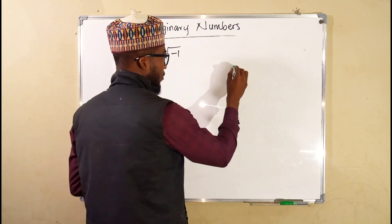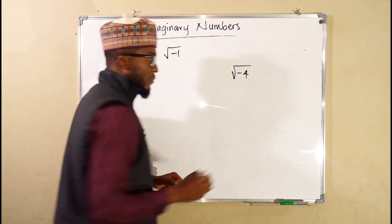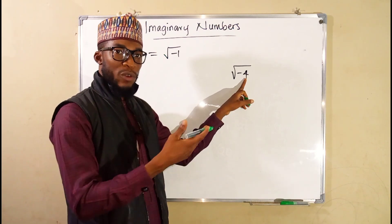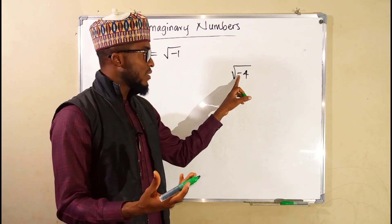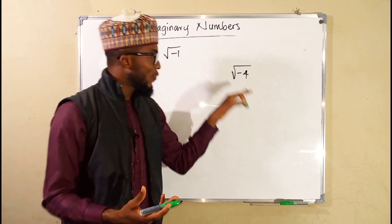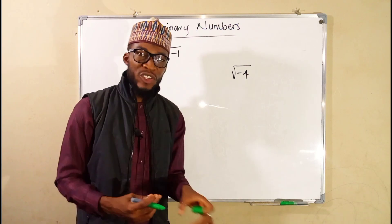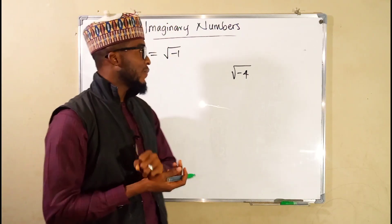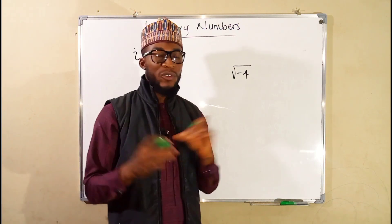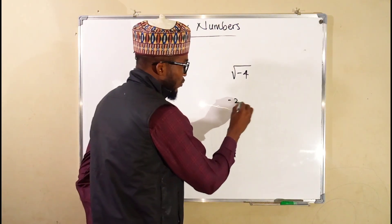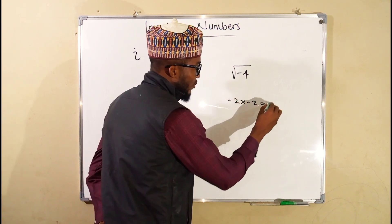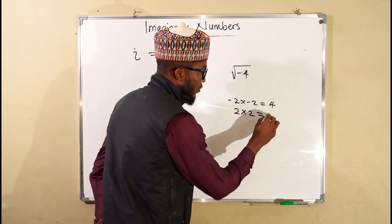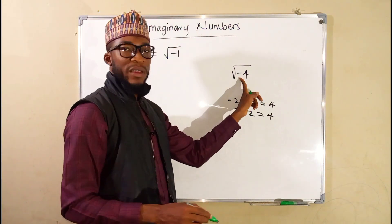For instance, if we have the square root of negative 4: 4 is a perfect square whose square root is 2, but this is not positive 4, it is negative 4. To find the square root of negative 4, we need two numbers that multiply together to get negative 4 — and no such real numbers exist, because negative 2 times negative 2 gives positive 4, and positive 2 times positive 2 also gives positive 4.